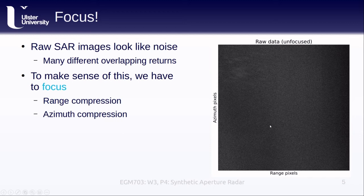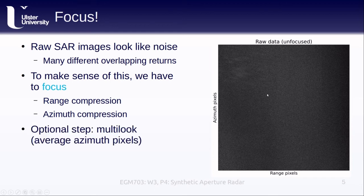The second step is very similar, known as azimuth compression, where we correct the Doppler shifts in the azimuth direction. Because we typically end up with a higher azimuth resolution than range resolution, the image is going to be stretched out in the azimuth direction. So we can also use a technique called multi-looking, where we effectively average together a given number of azimuth pixels to end up with an approximately square image.